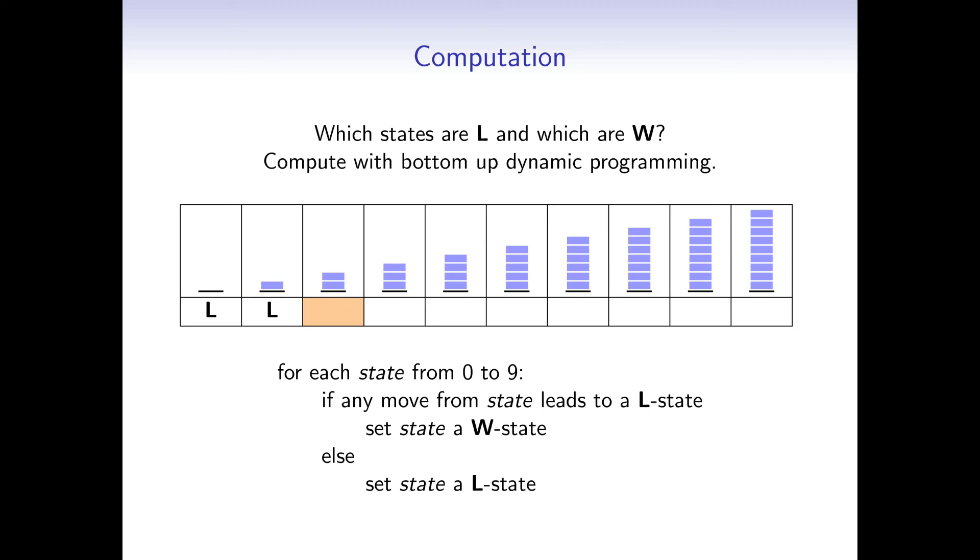But now it gets interesting. From the pile with 2 blocks, we can reach a losing state by removing 2 blocks. So this is a winning state. From the pile with 3 blocks, we can even reach 2 losing states. So this is also a winning state. And from the pile with 4 blocks, we can reach 1 losing state. Therefore, this is also a winning state.